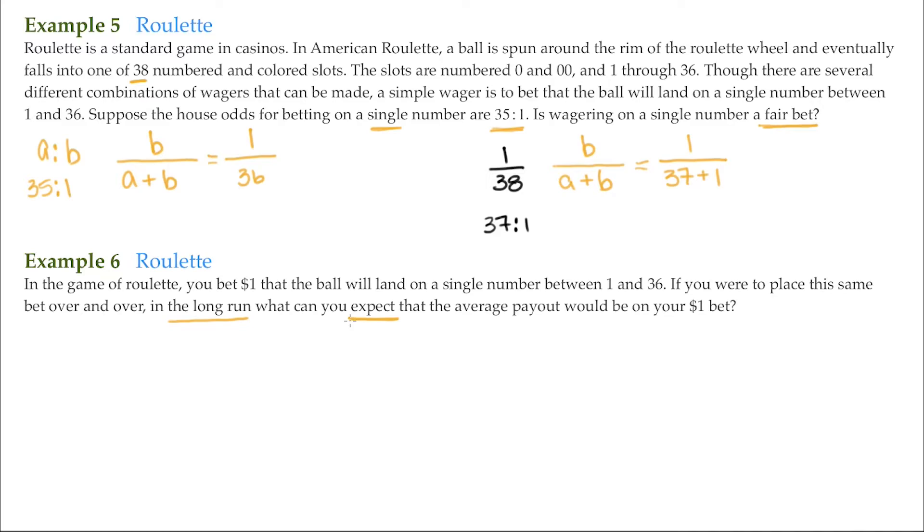So odds are given so that a bettor can understand what the return would be on any particular winning wager. But we cannot expect to win on any specific bet. But we can determine what to expect on repeated wagers over and over. That's known as the expected value. So the way to be able to determine that is one of two things are going to happen when you play. You're either going to win or you're going to lose. So I'm just going to write it down right here: win or lose.